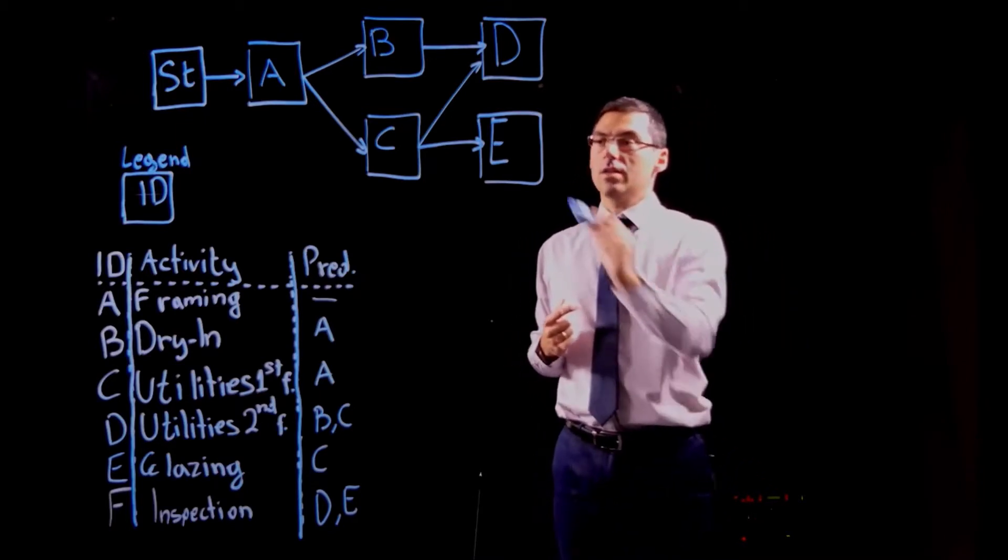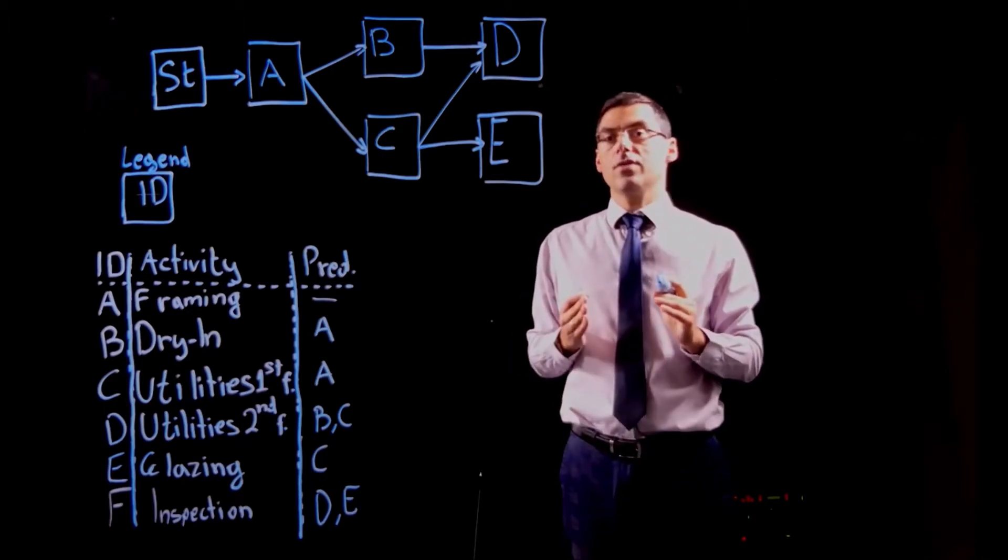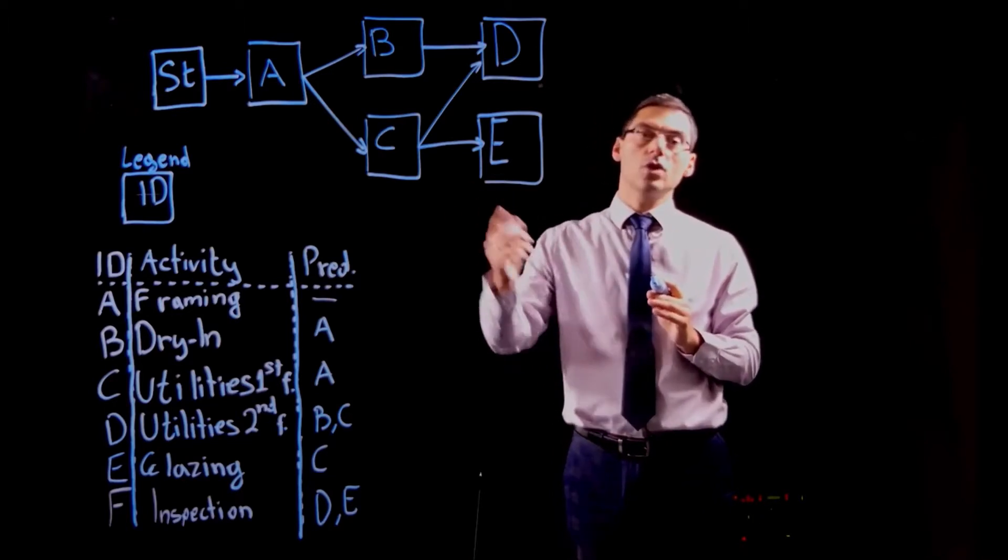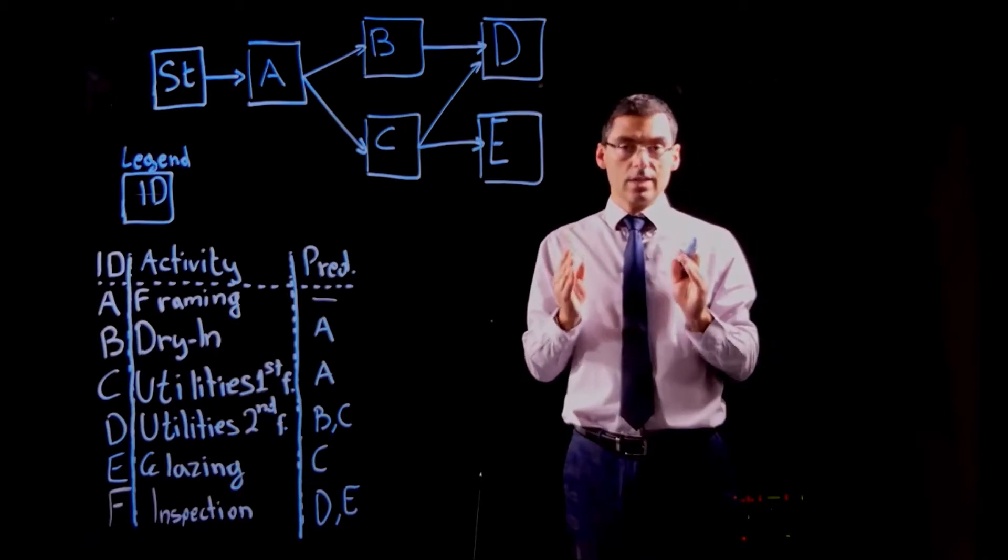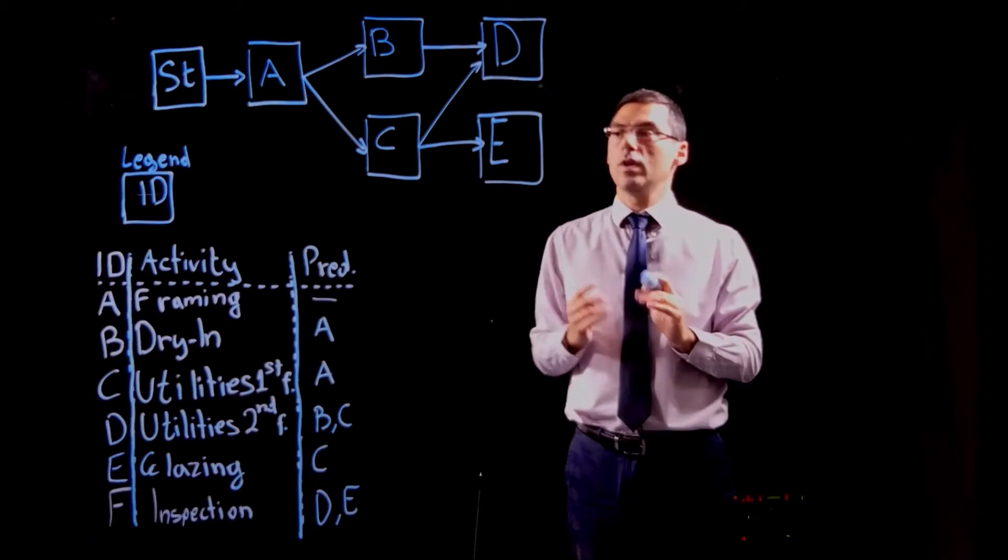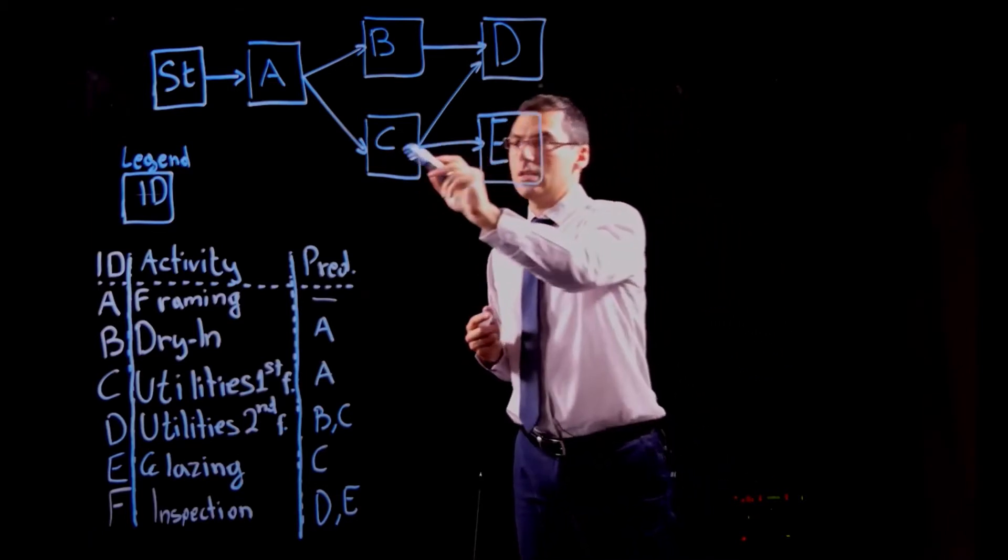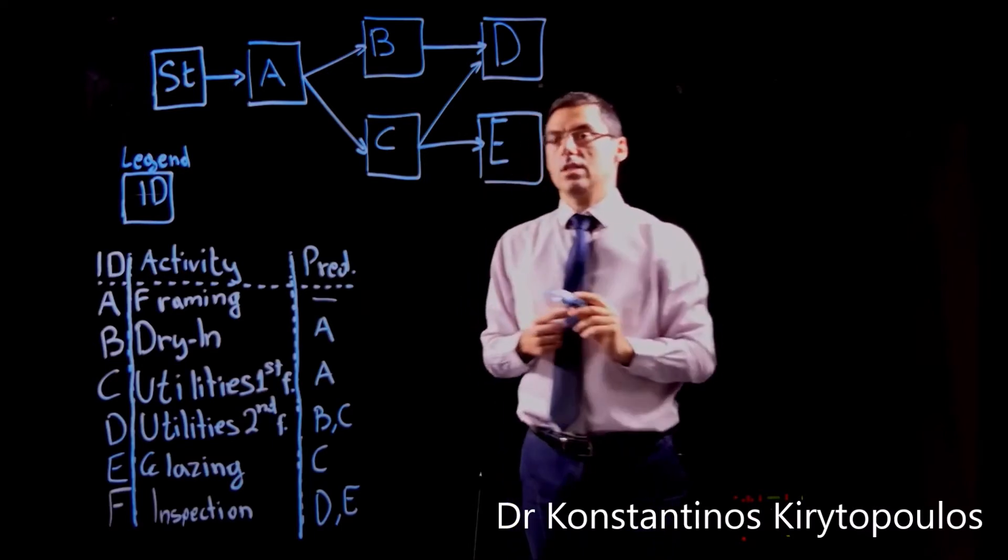However, don't forget that this is what we call a directed graph. A directed graph is a graph that the nodes are not connected by just lines but arrows which show how we move. So you know when you see the arrow that you go from C to E. C is the predecessor, E is the successor activity.